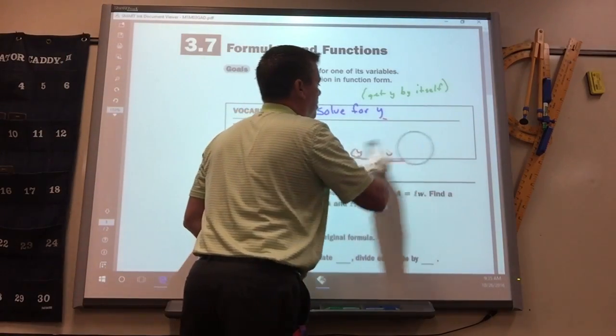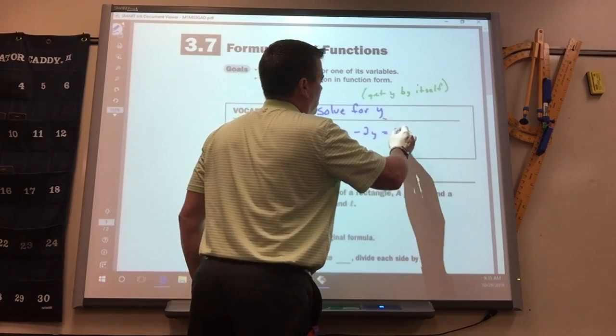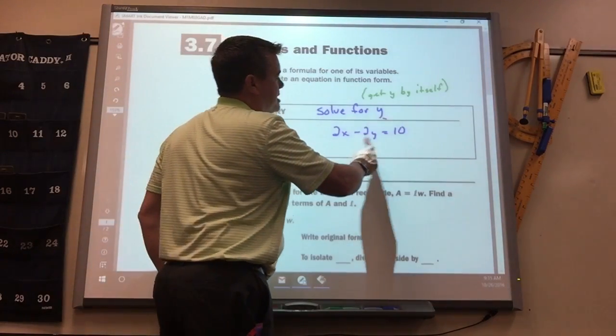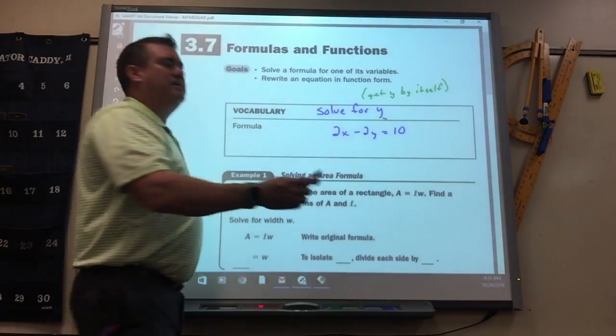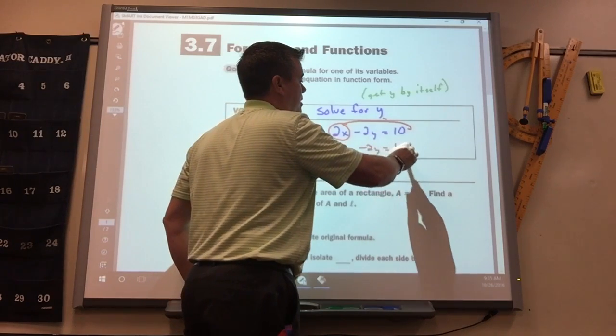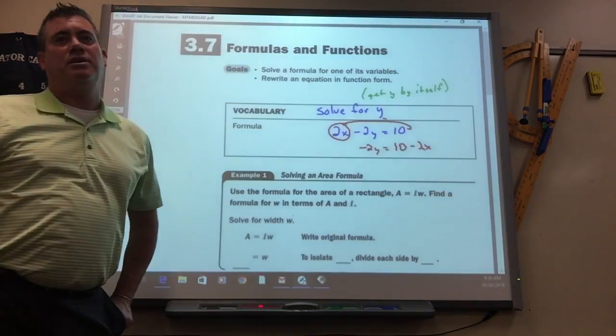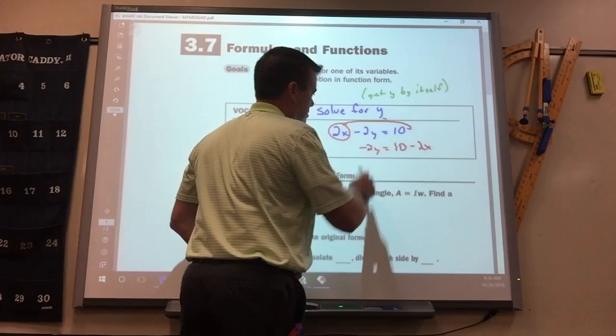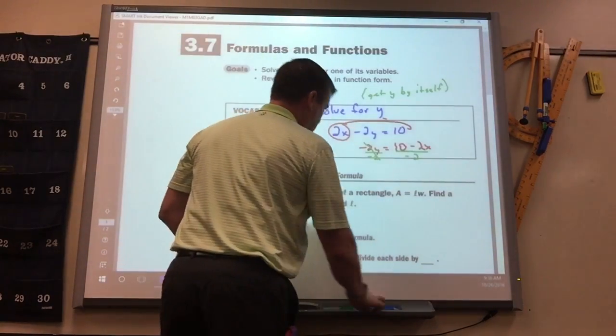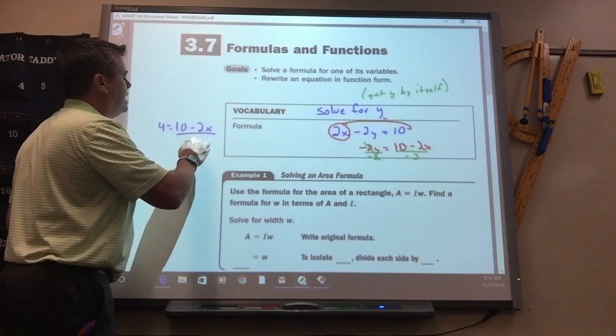Now, sometimes they have a little more to it. That was just one step. Okay, this one, you'd have to do two things. Again, this is attached to the y, so that's going to leave last. Anything not attached, you move first. So this is going to stay where it's at. This is going to stay where it's at. This changes to a minus 2x. Now you have one more thing you can do. Divide by negative 2. Divide by negative 2. And you're done.